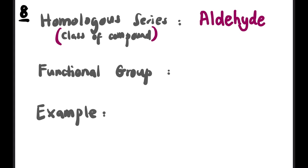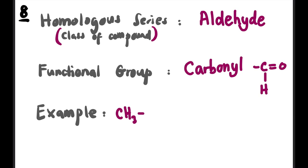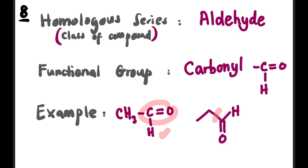The eighth homolog series is aldehyde. Its functional group is called carbonyl — C=O with an H attached at the end (C=O–H). You can circle just the C=O, or circle the whole C=O–H group — either is acceptable. In skeletal form, circle and label the carbonyl group.